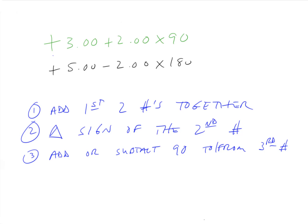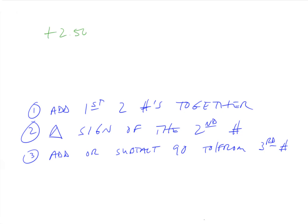It works the other way as well. So let's take an example where we have plus 2.50, minus 1, axis 20, and we want to convert that to plus cylinder. Step one: we add the first two numbers together. Plus 2.50 and minus 1 is plus 1.50.